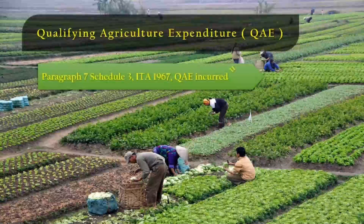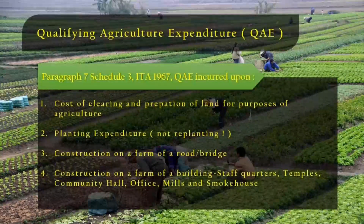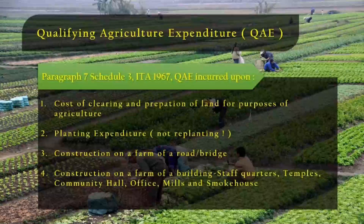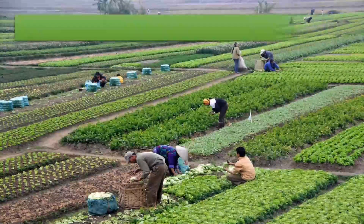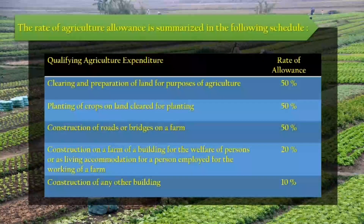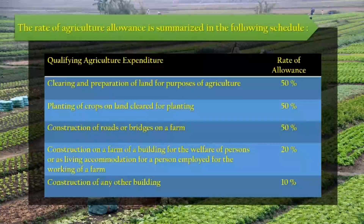Paragraph 7, Schedule 3, ITA 1967. QAE is incurred upon: cost of clearing and preparation of land for purposes of agriculture; planting expenditure (not replanting); construction on a farm of a road or bridge; construction on a farm of a building such as staff quarters, temples, community hall, office, mills, and smokehouse. Rates: clearing and preparation of land 50%; planting of crops 50%; construction of roads or bridges 50%; construction of welfare or living accommodation buildings 20%; construction of any other building 10%.